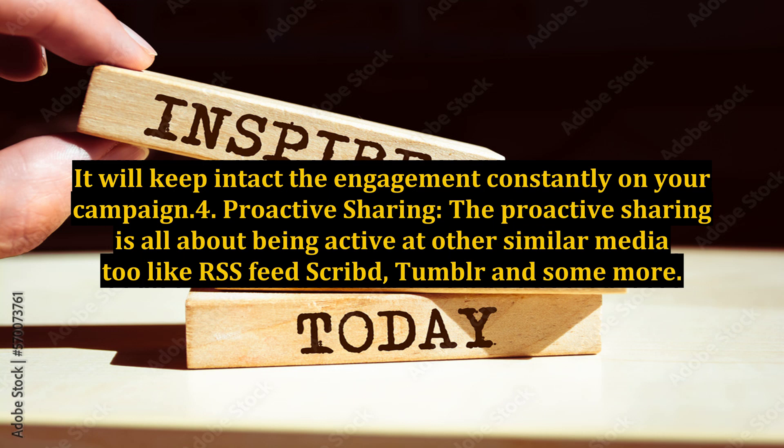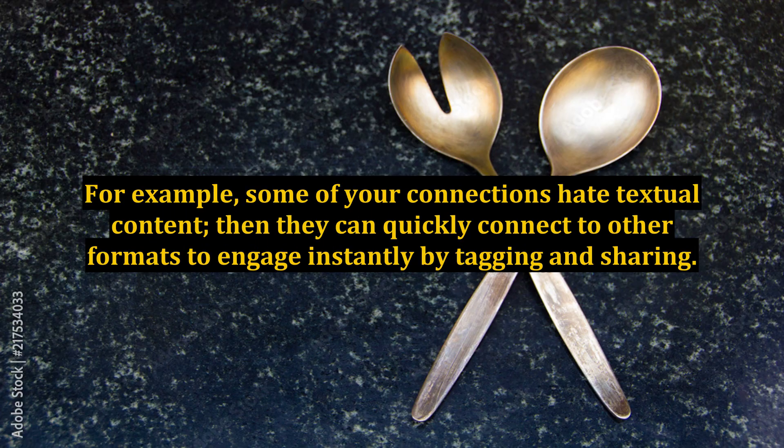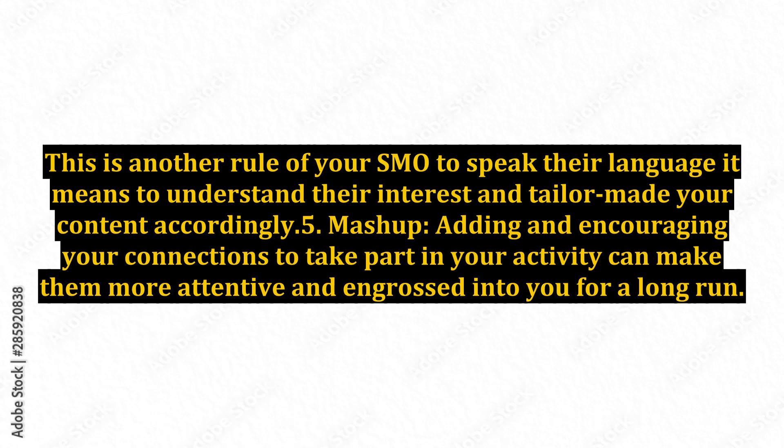Rule 4: Proactive sharing. Proactive sharing is all about being active on other similar media too, like RSS feed, Scribd, Tumblr, and more. Similarly, it is also a proactive measure to keep your content in various other formats like slides, images, and infographics. For example, some of your connections may dislike textual content, so they can quickly connect to other formats and engage instantly by tagging and sharing. This is another SMO rule: to speak their language, meaning understand their interest and tailor your content accordingly.